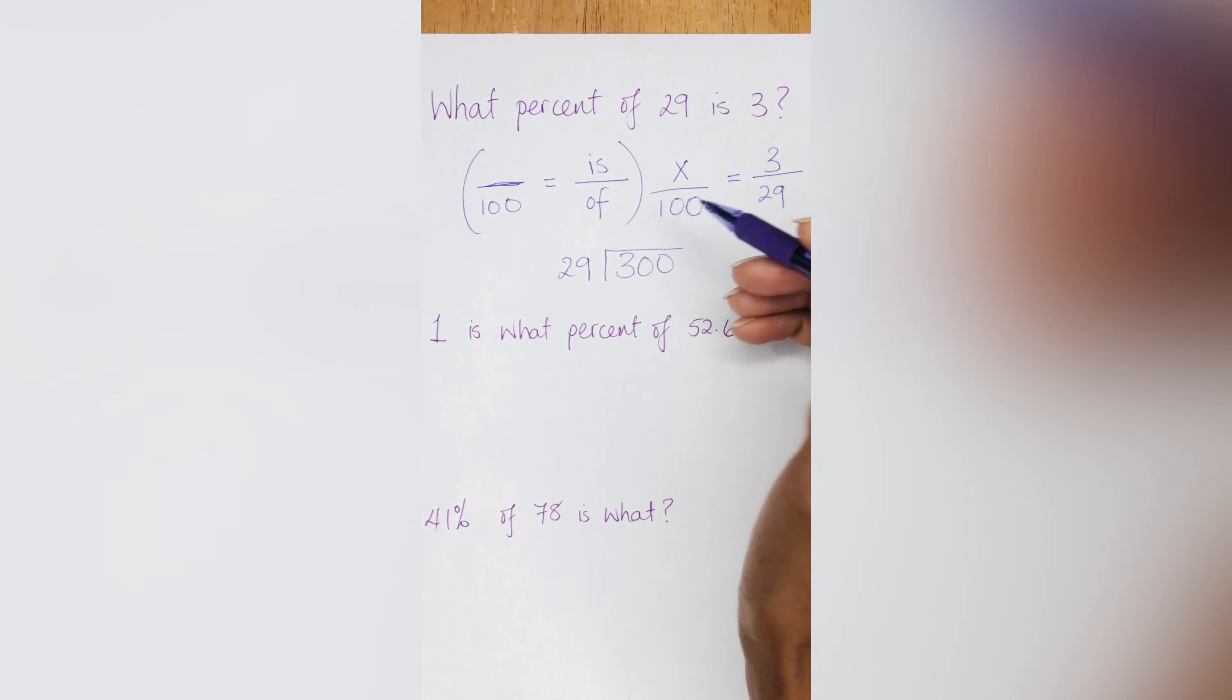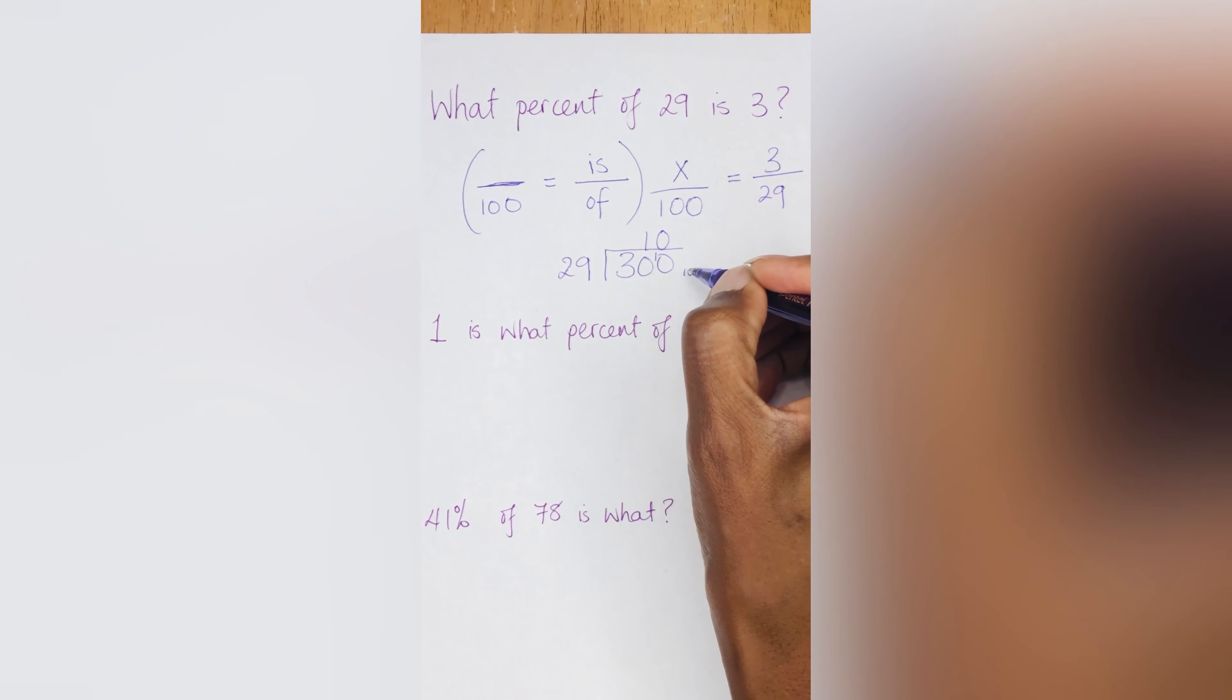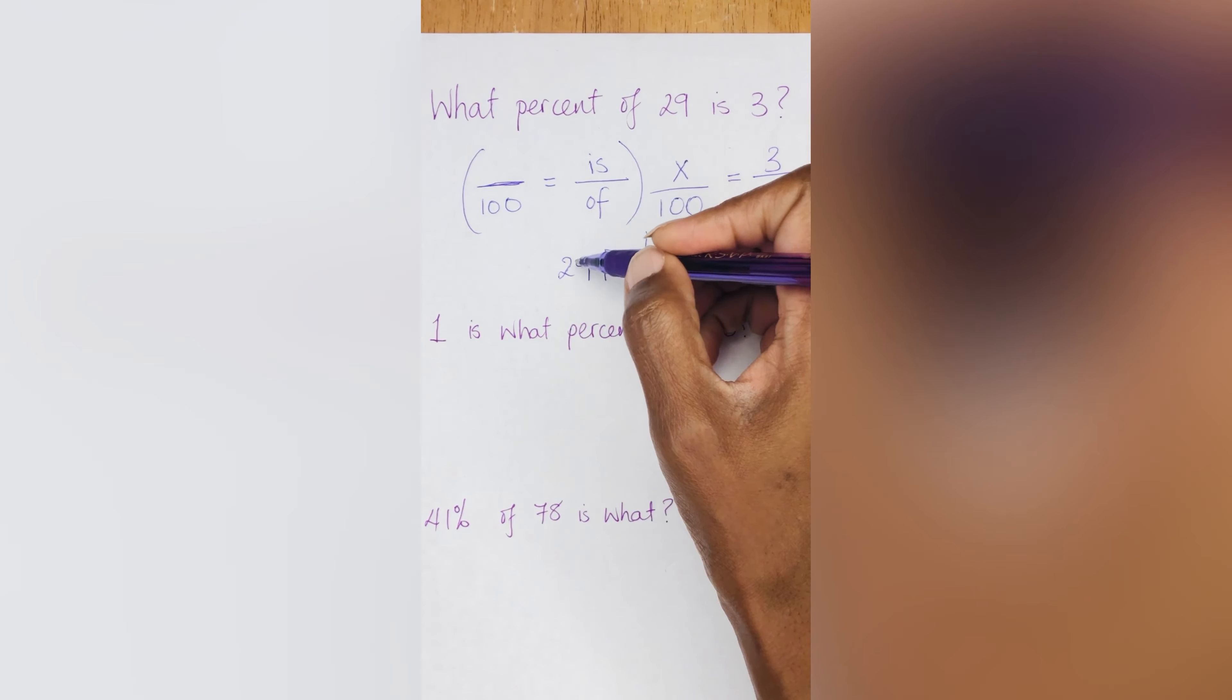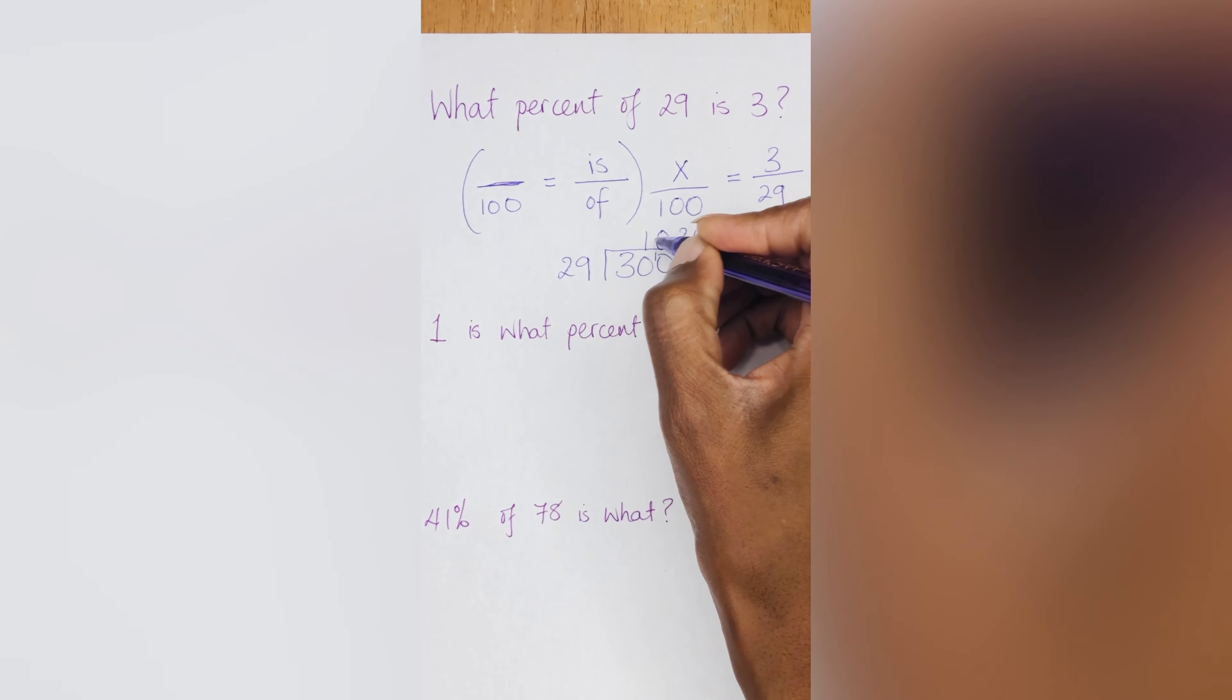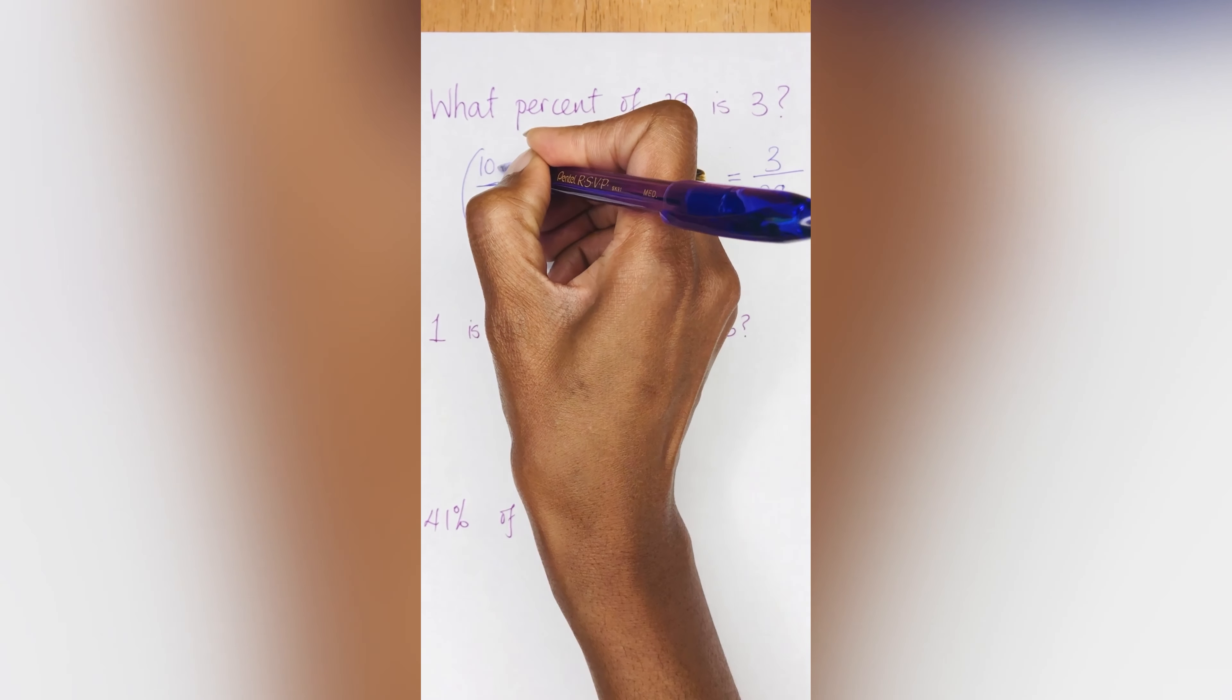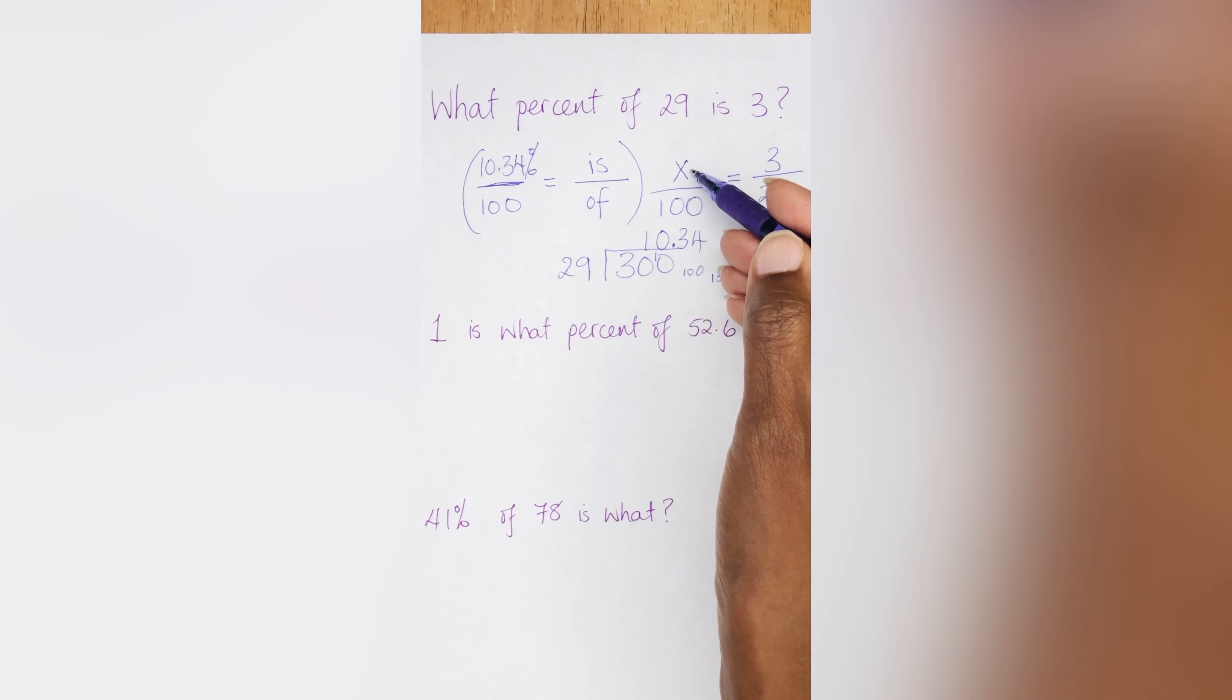All right. So 29 into 30, that goes one time, remainder 1. 29 into 10, that can't go. 29 can't go into 10. So you put a zero. 29 to 100 is going to go about 3 times and that's going to remain about 13. 29 into 130, it goes about four times. Your decimal is going to be here. So it's 10.34% or 10.3%, whichever one you prefer. So what percent of 29 is 3? The answer is 10.34%. That's your X.